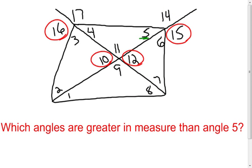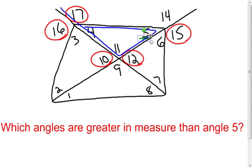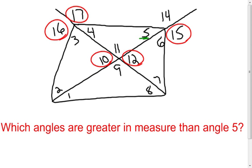Going back to angle 5: angle 17 would be an exterior angle of the triangle that angle 5 is in. Therefore this exterior angle is larger in measure than this remote interior angle. Those are all of the angles that I know have to be larger in measure than the measure of angle 5. Yes, there are going to be some that actually look larger in measure, but we can't prove it using any theorem.